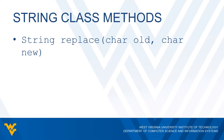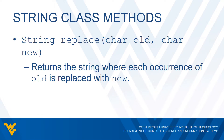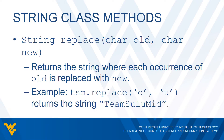The next method we'll look at is called the replace method. The idea with this one is that we're going to return a string where each occurrence of our old character is replaced with a new character. So we pass two characters — we look for every instance of the old character and replace it with our new character. So if we have TSM.replace, and O is my first character and U is my second character, this is going to return the string 'team Sulu mid' because we replaced every occurrence of an O with a U.